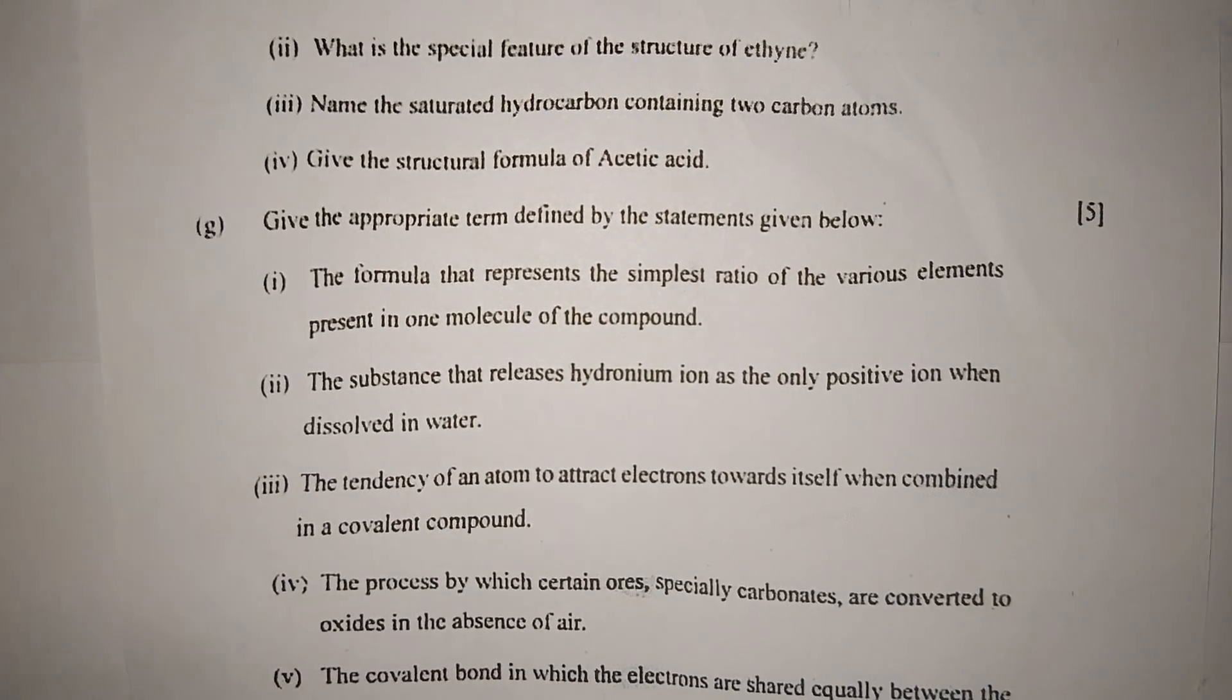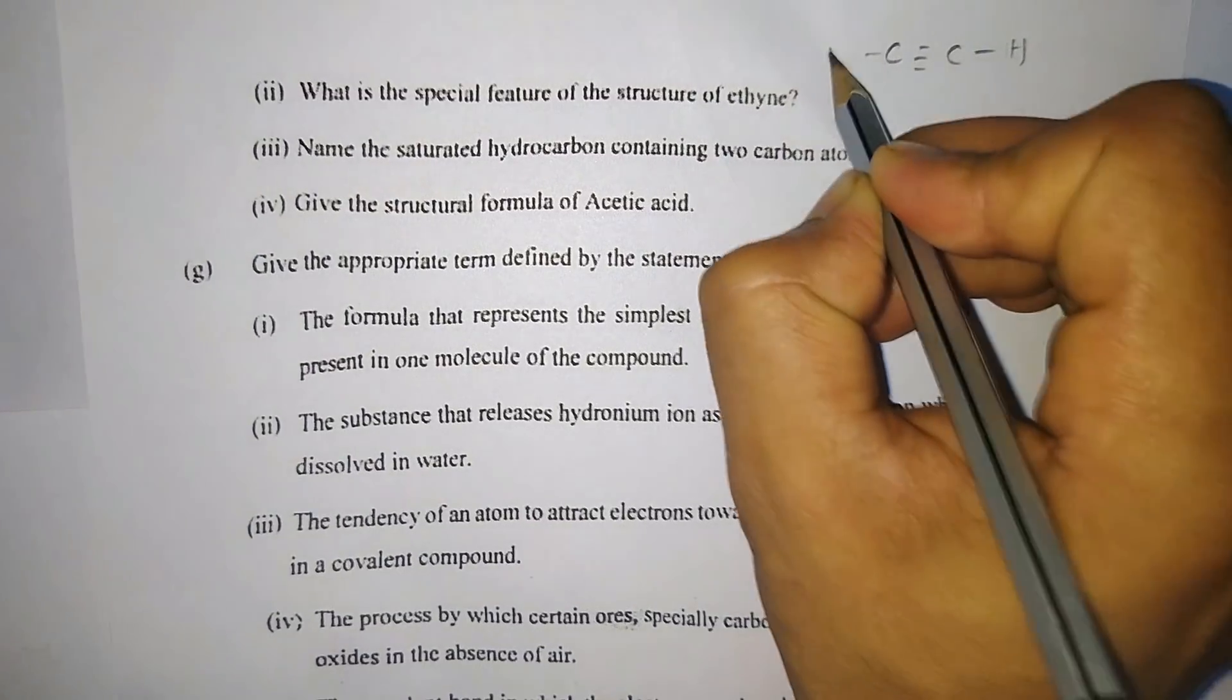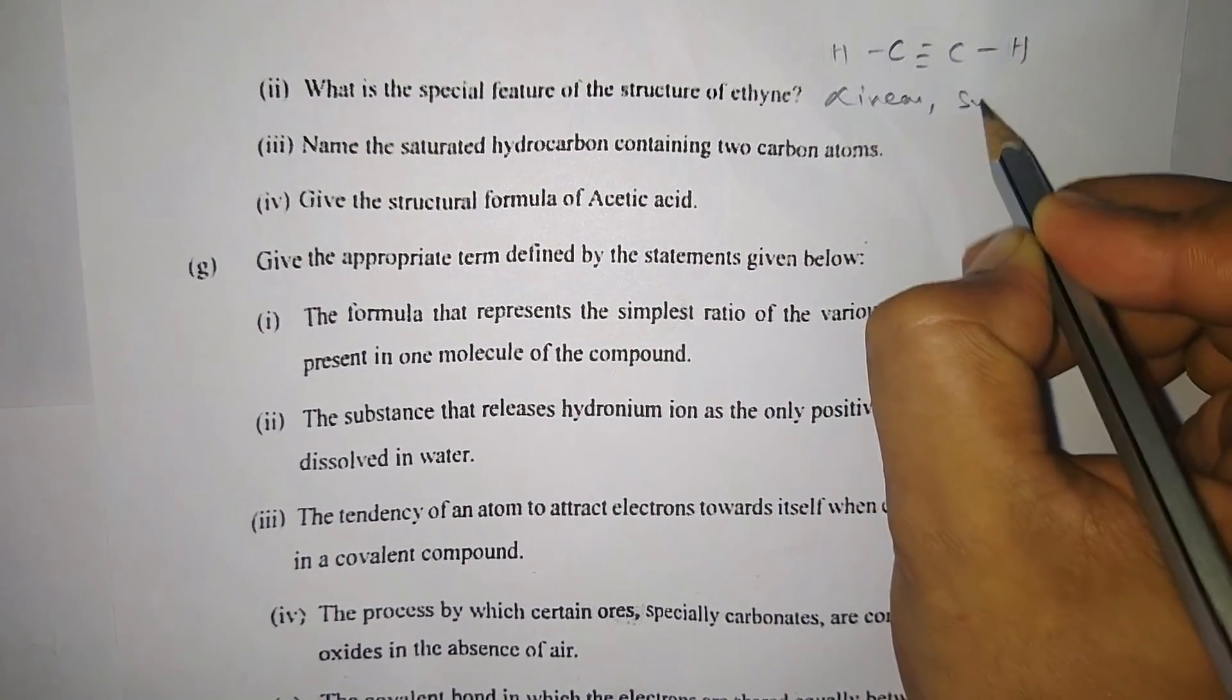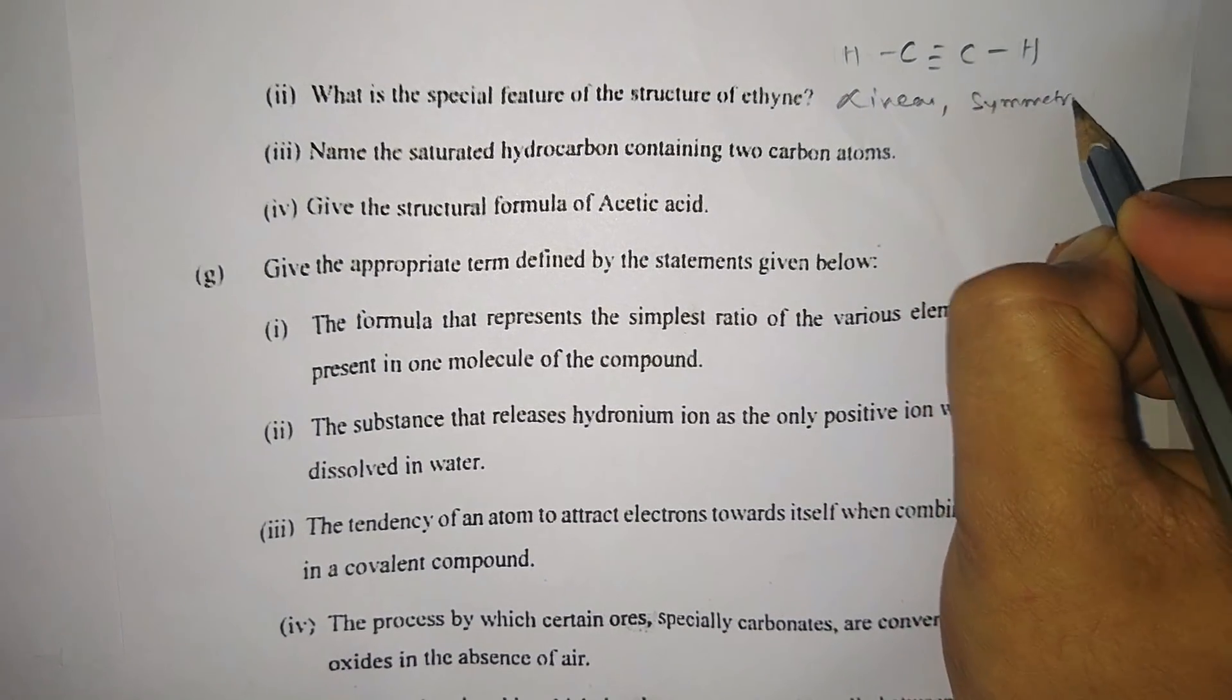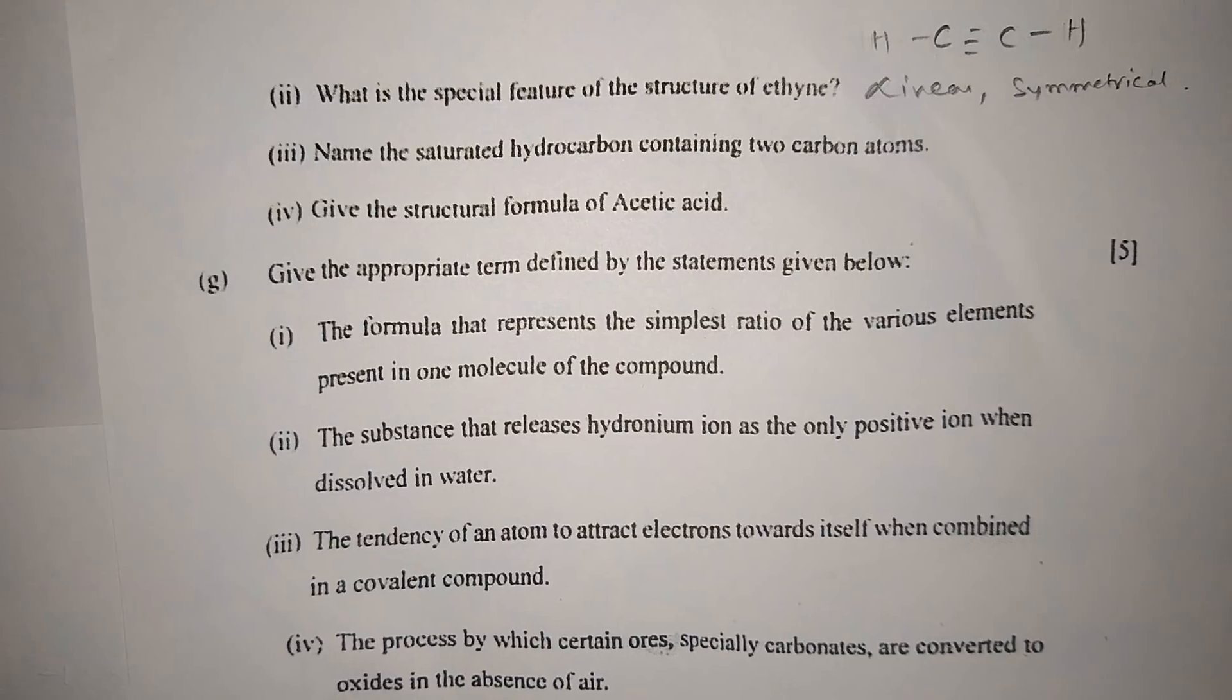Number two: We have two carbon atoms, so the root word will be eth. It is a single bond, so ethane. And we have CHO group, that is aldehyde group, so we will have -al. Since it is present at one position, you can write 1-ethanal.